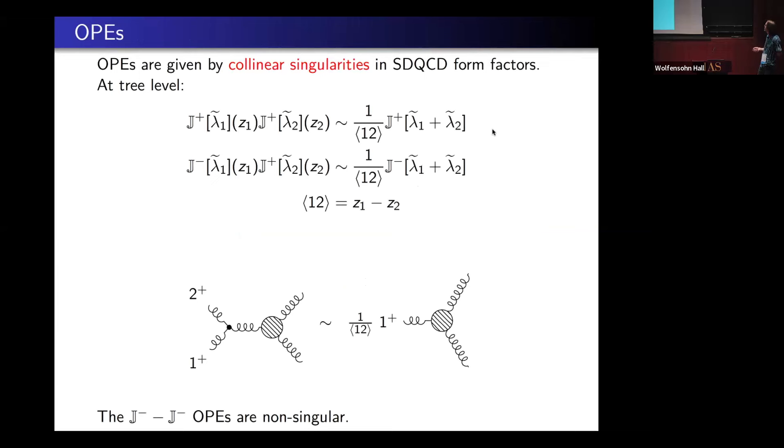For example, let's work at tree level. This blob represents some operator in self-dual QCD, and I'm maybe studying some four-point form factor. When these two positive helicity gluons' momentum becomes collinear, of course we get a pole which looks like 1 over one-two. This is translated into a chiral algebra statement by saying, if I take J plus times J plus, their OPE has a 1 over one-two pole times J plus. The translation between the tree-level splitting function and the chiral algebra OPE is just a very trivial translation.